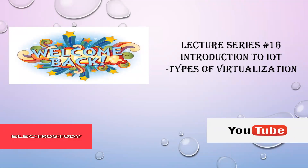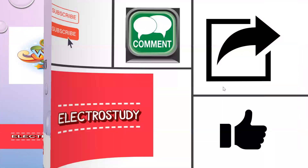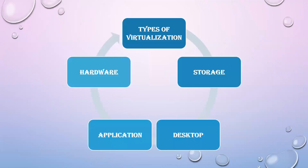Hello everyone, welcome back to our YouTube channel Electro Study. This is lecture series 16, introduction to IoT, dealing with types of virtualization. In the previous video we covered what virtualization is, why it is used, and how resources are allocated with the help of virtualization. In this video we are going to see the types of virtualization, which are divided into four types: hardware, storage, application, and desktop virtualization.